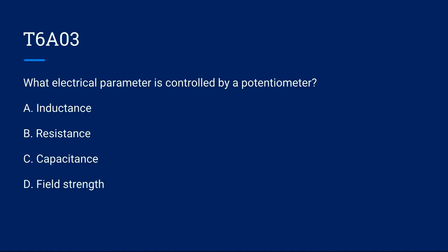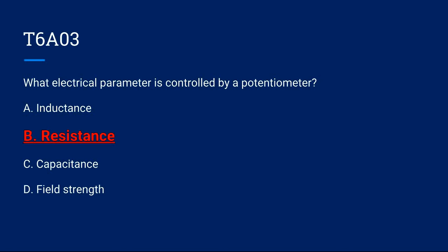T6A03: What electrical parameter is controlled by a potentiometer? A, inductance. B, resistance. C, capacitance. Or D, field strength? The correct answer is B, resistance.